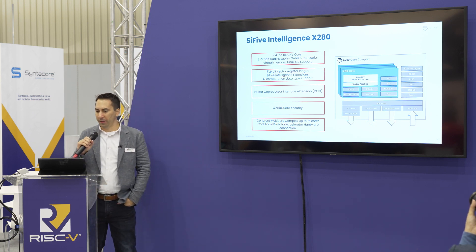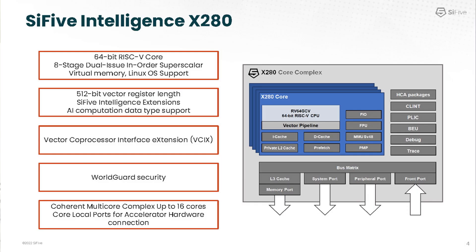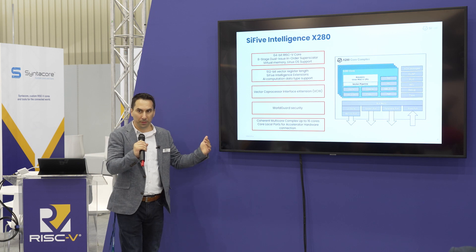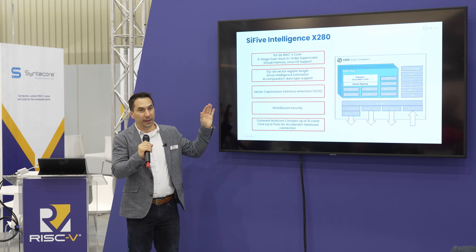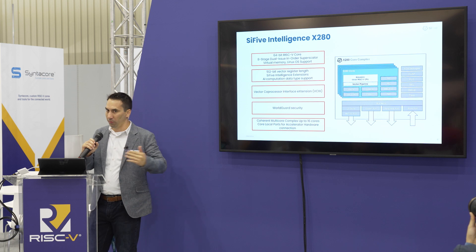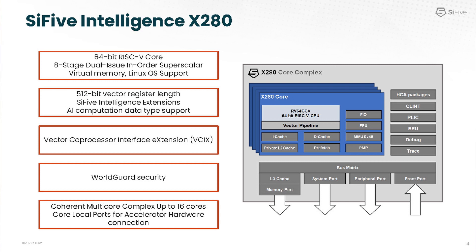At a high level, an overview of the processor itself: the X280 on the scalar side is based on a 64-bit, eight-stage, dual-issue, in-order pipeline — high-performance but still efficient. It supports virtual memory and is capable of running Linux and rich operating systems with high-level software stacks. In addition, on the scalar side, we also have a very potent vector engine supporting up to 512-bit vector ALUs, plus the SiFive Intelligence extensions for custom data types. New to this release is the vector coprocessor interface extension, which gives customers direct access to the vector register file. We've also added WorldGuard system security and support for up to 16 cores.